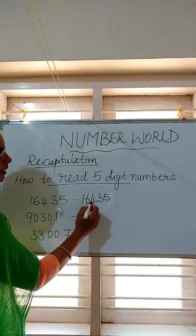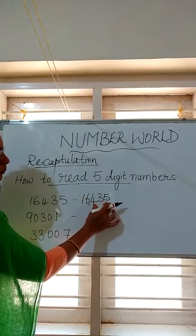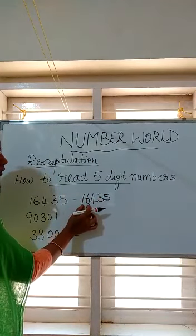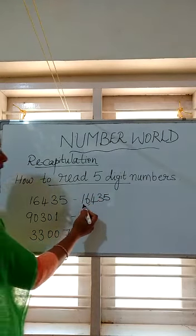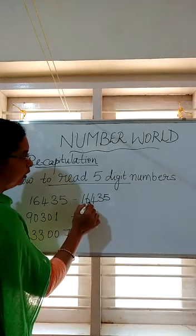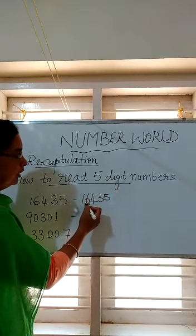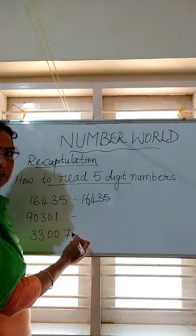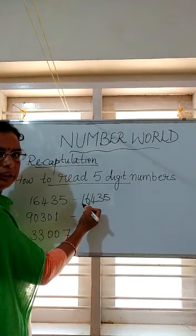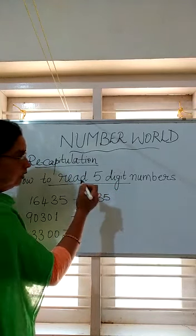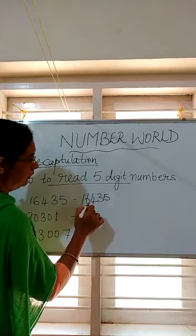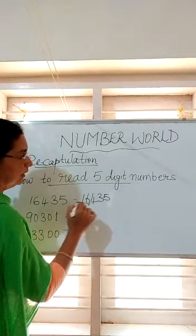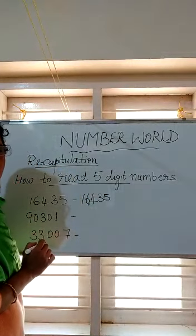We can read 435 as a three-digit number. In the second group, we got the number 16. After grouping — grouping means you put a comma in between — you have to read from the left end, not from the right end. The left-end group contains the number 16.